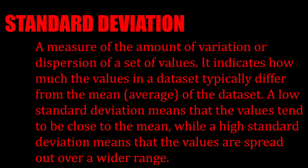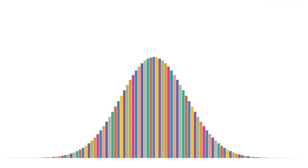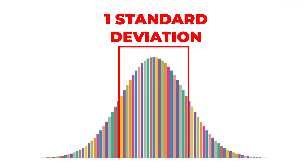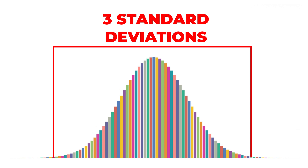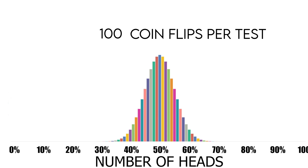A concept called standard deviations helps to quantify this. For a normal distribution or bell curve, 68% of the results will fall within one standard deviation, 95% within two standard deviations, and 99.7% within three standard deviations. So if you flip a coin 100 times, the number of heads should fall within about 35 to 65, which is roughly three standard deviations. If you got 20 heads, that comes out to six standard deviations away — it'd occur about once every 36 million times.